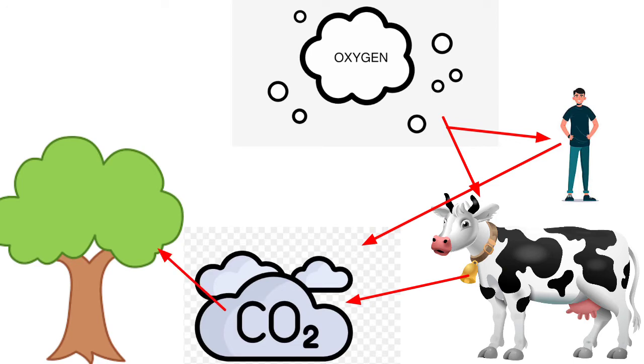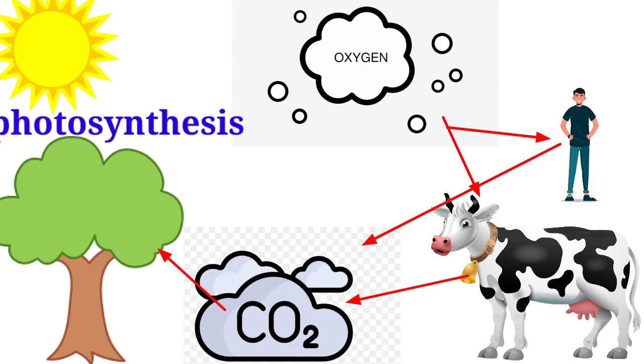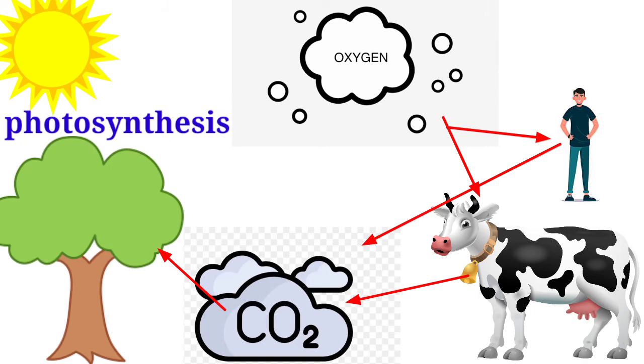Plants use this carbon dioxide in the presence of sunlight to do the process of photosynthesis. In this process of photosynthesis, plants release oxygen back in the atmosphere. Again, this oxygen is used by the animals including the human beings.